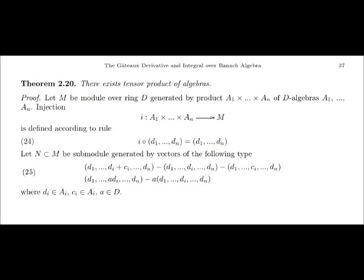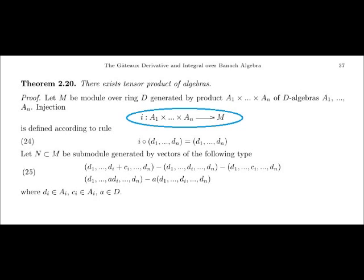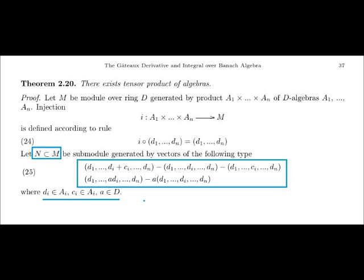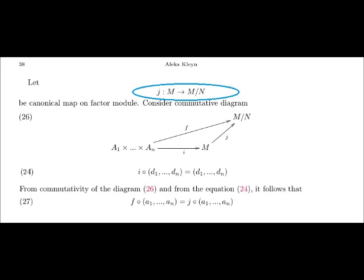Our next task is to prove the existence of tensor product of algebras. Let M be the module over ring D generated by the product of the algebras A1, ..., AN. The injection of the product of the algebras A1, ..., AN into the module M is defined according to rule 24. Vectors of the module M are linear combinations of vectors defined by rule 24. Let N be the submodule of the module M generated by vectors like equation 25, where D and C belong to A_i and a belongs to D.